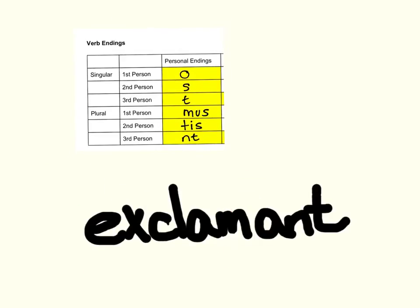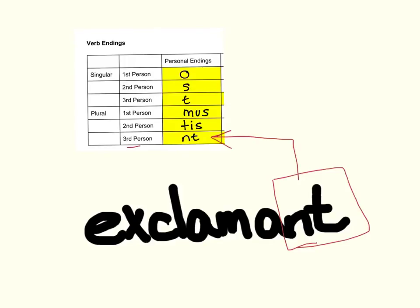Exclamant. Where's that ending? We're going to find that ending on the chart: NT. Notice it's plural and third person — more than one third person. It's not I, it's not you, it's that guy over there, but plural. So it's actually they. They exclaim. Or you might have a Latin subject with it, like servi — the slaves exclaim.